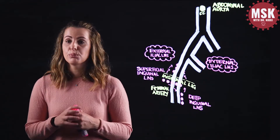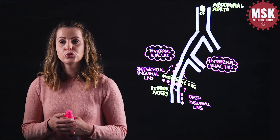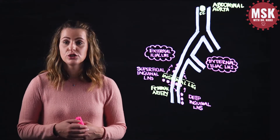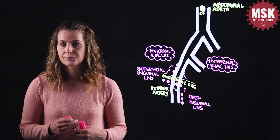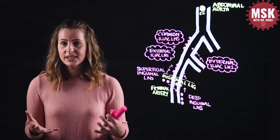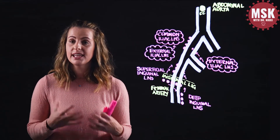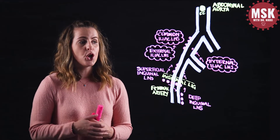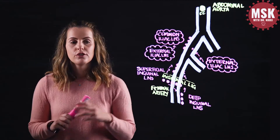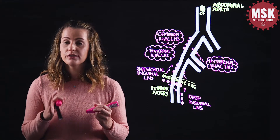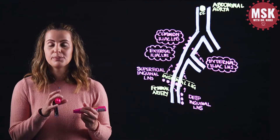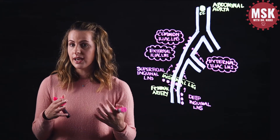Both external and internal iliac lymph nodes are going to drain to the lymphatic nodes around the common iliac vessels — the common iliac lymph node group. It's important to consider the anatomical relations of the pelvic viscera with the respective blood vessels to estimate where they are going to drain. At around this region we also have a small lymph node group located close to the medial sacral artery at the level of the bifurcation of the common iliac arteries.